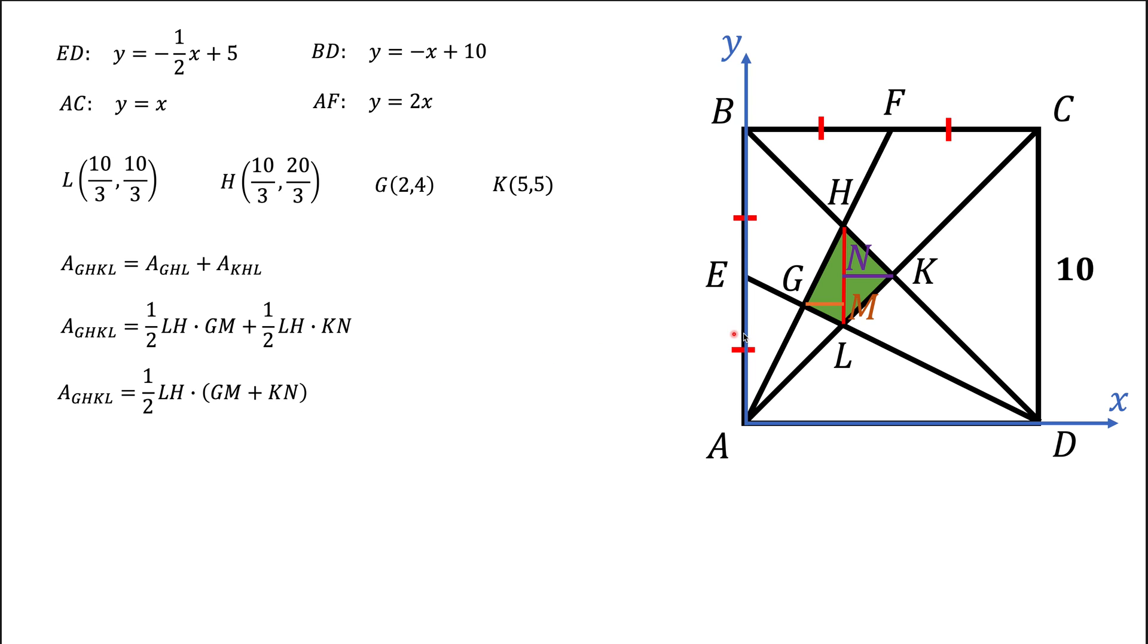Now, let's figure out what this LH is. And since LH is a vertical line, the length of LH will be vertical coordinate of H minus vertical coordinate of L. GM plus KN. Both of these GM and KN are horizontal lines. And their sum will be the difference between horizontal coordinates of point K and point G. And now we can combine everything together and get the final answer that the area of the green quadrilateral is 5.